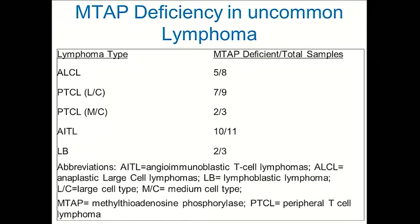We're interested in T-cell lymphoma. We recently published a paper showing that even uncommon lymphomas — angioblastic lymphomas and anaplastic large cell — have a high incidence of MTAP deficiency. There are very high rates of MTAP deficiency in lymphoma, so we have pursued studies in T-cell lymphoma in our laboratory.